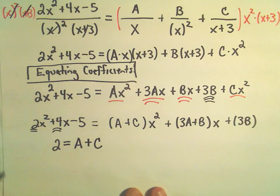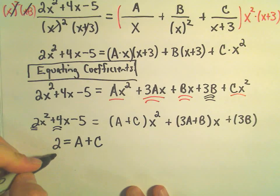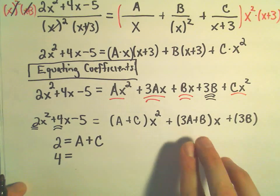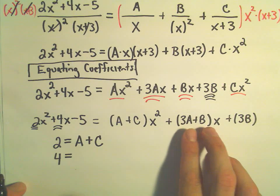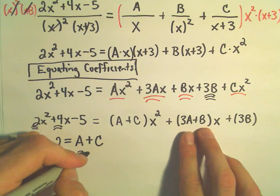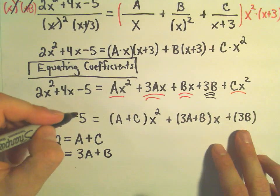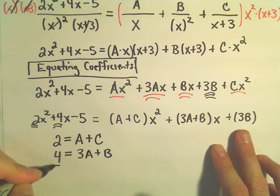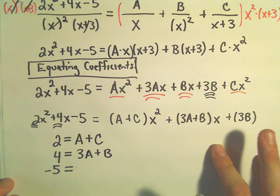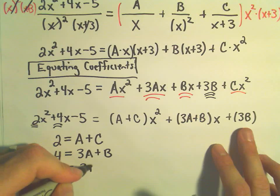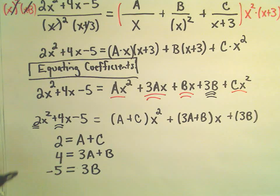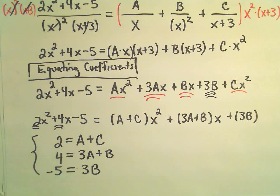What number is in front of the x on the left side? Well, there's a 4. And then what's the coefficient on the x on the right side? Well, that would be 3A plus B. And last but not least, the constant on the left side is negative 5. The constant on the right side is 3B. And notice now we've got a nice little system of linear equations.